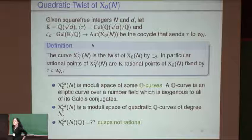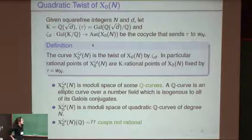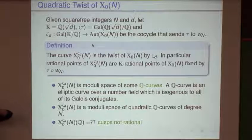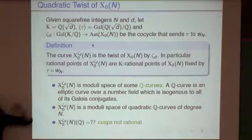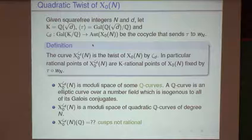This particular twisted modular curve is the moduli space of quadratic Q-curves of degree N defined over Q(√d) — so it has two ingredients, N and d. This is very specific in that sense. The first question is: fixing N, d, and a prime p, what can you tell about local points on this twisted modular curve? This was studied in my thesis.